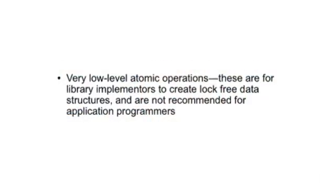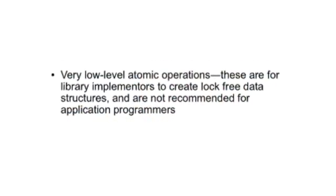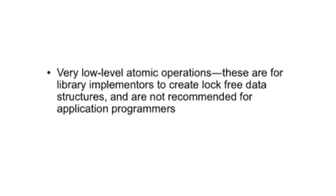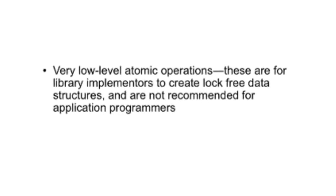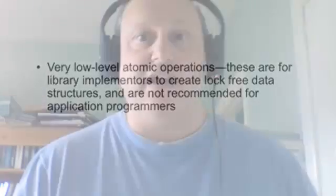Go supports concurrency at three levels. Firstly, very low-level atomic operations. These are the kind of operations that library implementers use to create lock-free data structures. The Go documentation and Go experts do not recommend this for application programmers because it's very difficult to get right and very easy to mess up. I don't cover it because it's just too low level and specialized.